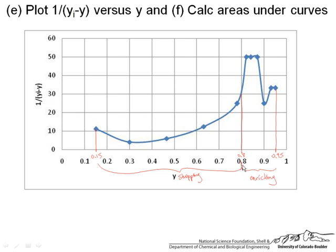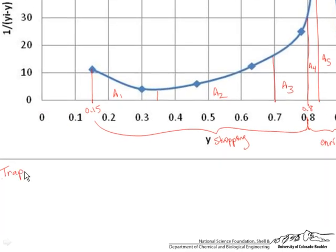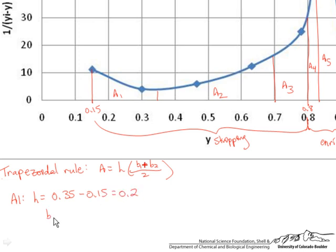To determine the area under this I used the trapezoidal rule and I used a whole bunch of areas. And I had area 1, area 2, area 3, area 4, area 5, area 6. And let me show you how I got the area in each one of these. So for the trapezoidal rule you could also use Simpson's rule. The area equals H times B1 plus B2 over 2. So for instance for area 1 I have the height equals 0.35 minus 0.15 and that equals 0.2. B1 equals 11. We will go across here and we get 11. B2 equals 4. So A1 equals 1.5.